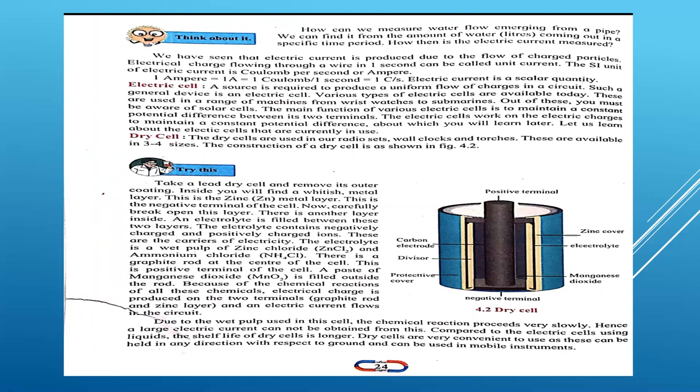This dry cell has two terminals: the upper one is called the positive terminal and the lower one is called the negative terminal. Inside, when you open that red everyday cell, you will find a whitish color metal layer. This is nothing but the zinc metal layer, which acts as the negative terminal.